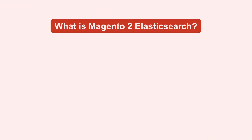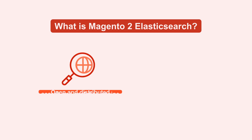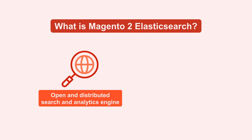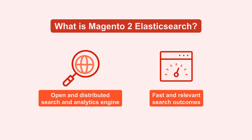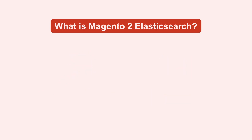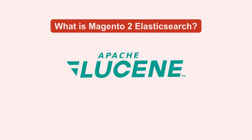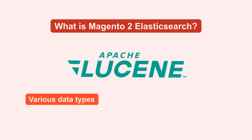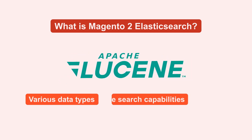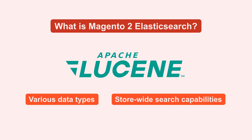First, let's understand what Magento 2 Elasticsearch is. It's an open and distributed search and analytics engine that offers fast and relevant search outcomes for your store. Powered by Apache Lucene, it supports various data types and enables store-wide search capabilities.